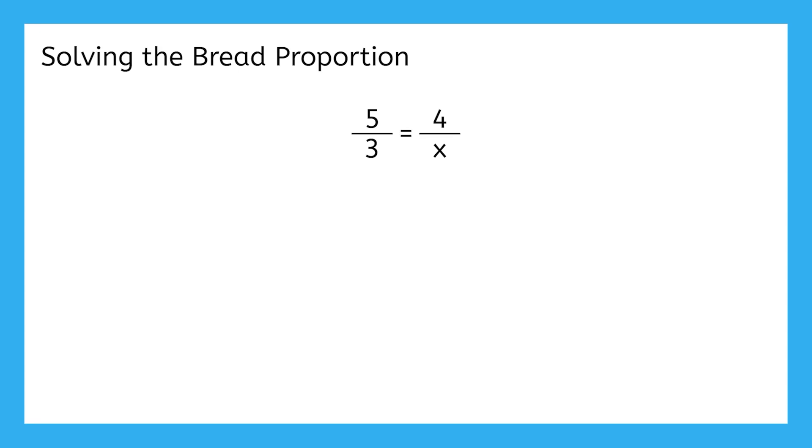Well, every time we want to get rid of a denominator, we just multiply it times both sides of the equation. Do you think I can just multiply both sides of this equation by x? Actually, yeah, that's exactly what we're going to do. So if I multiply both sides by x, that leaves me with just 4 on the right, and then I have 5x over 3 on the left.